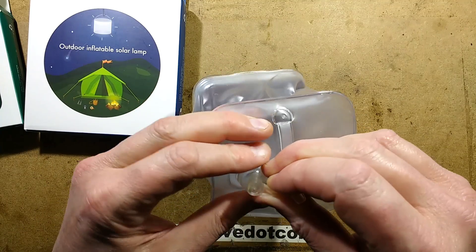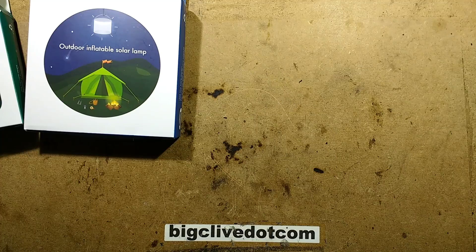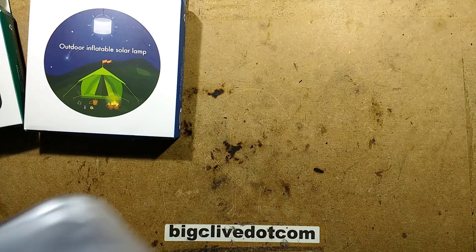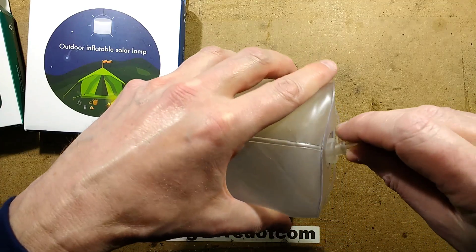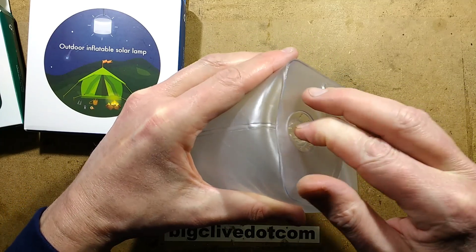One moment please while I blow into it. This is the unhygienic bit when it gets damp inside. Okay, so now we've got it going from that flat pack arrangement to being a sort of freestanding little light.